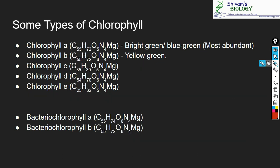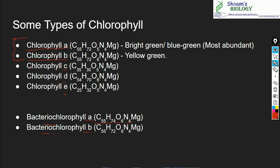There are various types of chlorophyll. Chlorophyll a and b are the most important types; others include c, d, e, and bacterial chlorophylls a and b. You don't need to remember the formula of all types. Chlorophyll a is bright green or blue-green in color and is the most abundant type. Chlorophyll b is yellow-green in color.